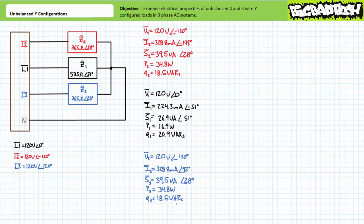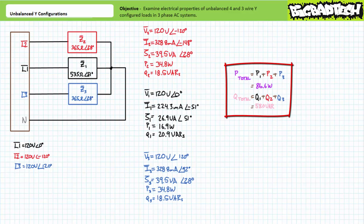Note that for unbalanced load conditions, one cannot simply multiply an individual branch power figure by three because they're no longer identical. To further complicate matters, one cannot even numerically summate individual apparent power magnitudes, since apparent power has both a magnitude and a direction consisting of real and reactive dimensions. One must account for apparent power angle when performing summations. It's easier to solve for total real and total reactive power first. Total real power equals the summation of individual real powers, yielding a total real power figure of approximately 86.6 watts.